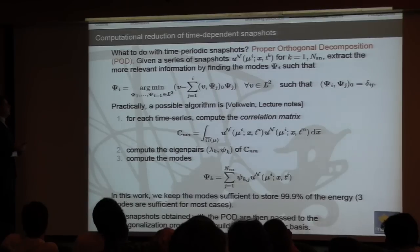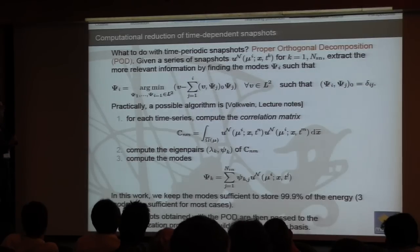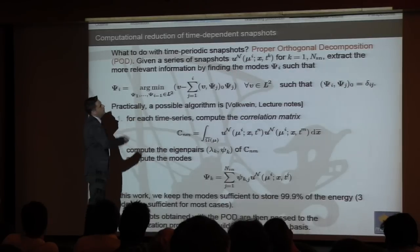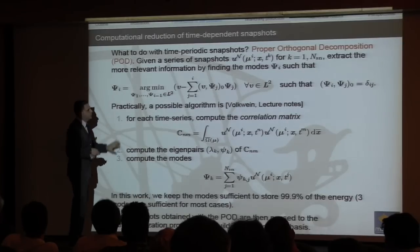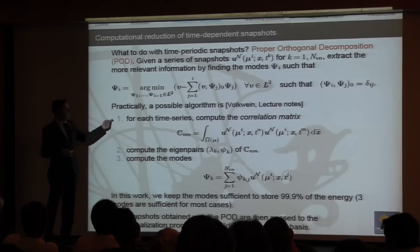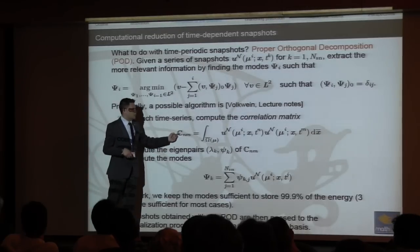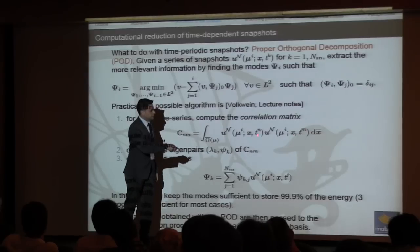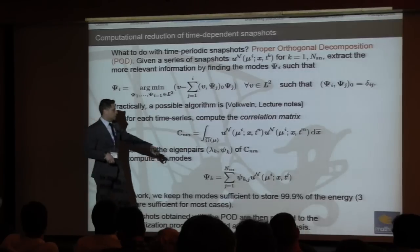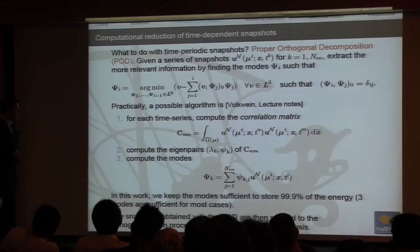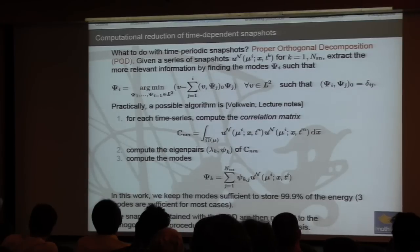When dealing with time-dependent problems, we can also build a reduced order model in time. For a fixed parameter value mu, we perform proper orthogonal decomposition in time by constructing correlation matrices from temporal snapshots, solving the resulting eigenvalue problem, and building time basis functions — this improves basis construction performance.